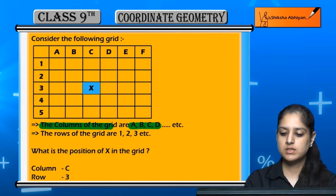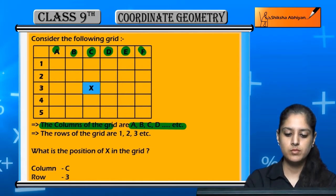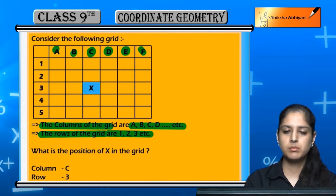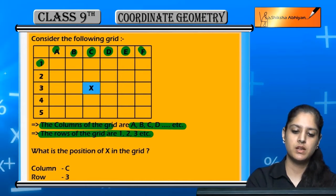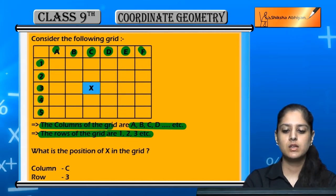The columns of this grid are named A, B, C, D, E, etc. The rows of this grid are represented by numbers: 1, 2, 3, 4, 5, etc.